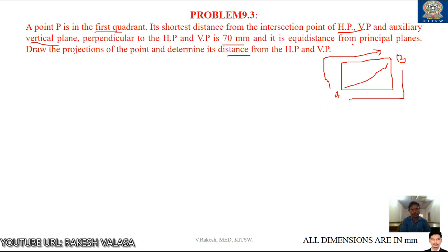That means, equidistance from principal planes. Here, principal planes means horizontal plane and vertical plane. How to take equidistance? This diagonal makes equal angle from both HP and VP.